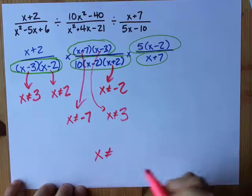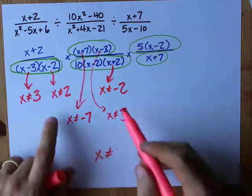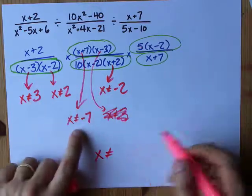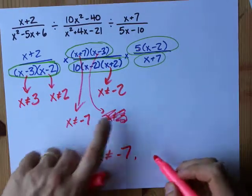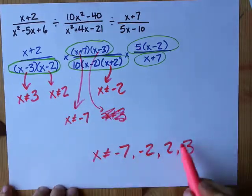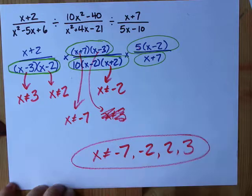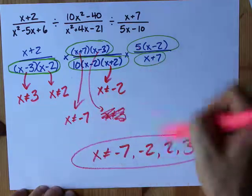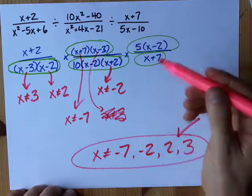So my final answer here is x not equal to oh I accidentally did positive three twice. I didn't need to do that but hey free country negative seven negative two two and three. I just like putting them from lowest to highest when I state my answer. There it is. Literally any factor that was ever on bottom needs to be accounted for in the restrictions.